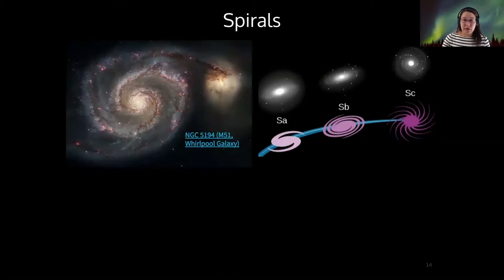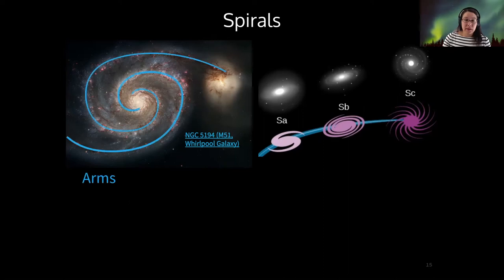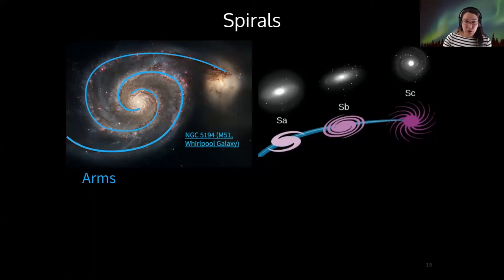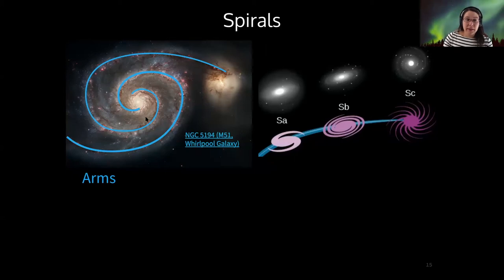Let's start with the spiral galaxies. The Whirlpool galaxy that we're looking at here is an example of a spiral galaxy. Spirals consist of two visually striking features. One is the spiral arms — the area that's very bright and an area of active star formation. And then there's an area at the center called the bulge. So the arms and the bulge.